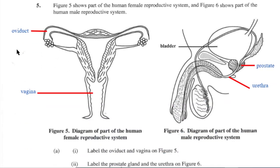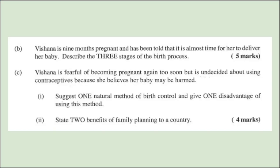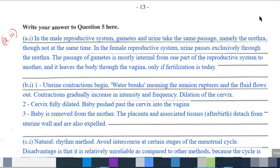Now for section B. We had to do some labeling — the oviduct, the vagina, the prostate, and the uterus. Those are your labels. This is the suggested answer for part A3 and for part B1 — the stages of the birth process. If you need to pause to check, please do so.